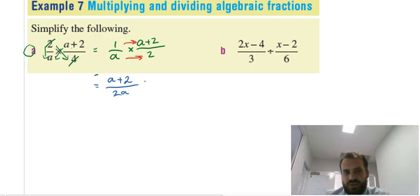You can try to factor out stuff, but nothing's going to happen, so there's your answer. Now the next one is a division. Now remember that when you're dividing fractions, it's the same as multiplying the reciprocal, the upside down of the second fraction.